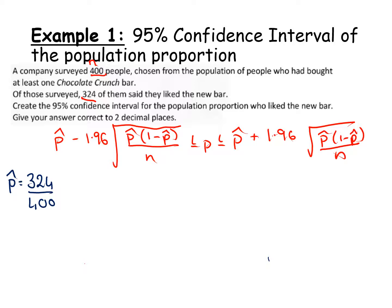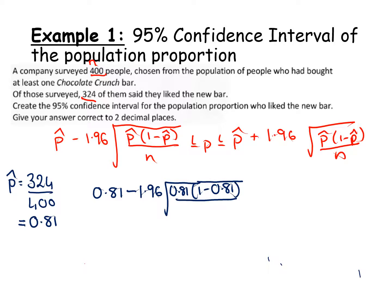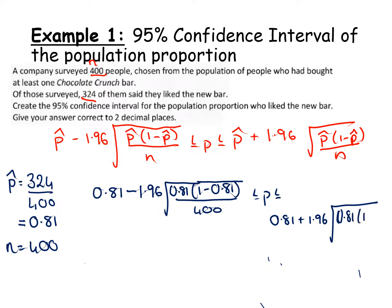When dealing with this formula, it is much easier, if possible, to work with decimals. In this case, 324 divided by 400 works out as 0.81. So the formula becomes: 0.81 minus 1.96 times the square root of 0.81 times (1 minus 0.81) all over 400, less than or equal to p, less than or equal to 0.81 plus 1.96 times the square root of 0.81 times (1 minus 0.81) all over 400.